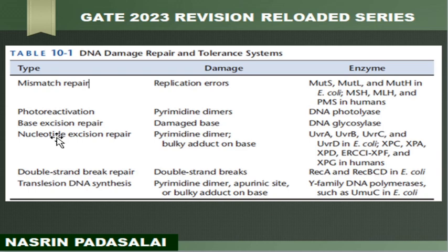Next is photoreactivation. This is a type of DNA repair system that corrects pyrimidine dimers. The enzyme involved in photoreactivation DNA damage repair is DNA photolyase. Next is base excision repair (BER): it corrects and removes the damaged base, and the enzyme involved includes DNA glycosylase.